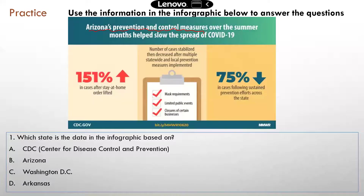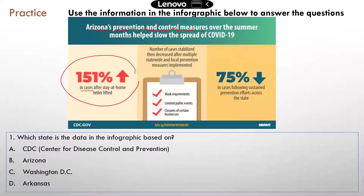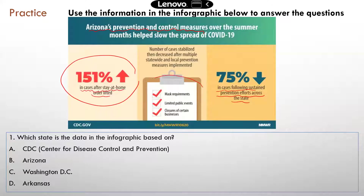You can read the three columns — three boxes. The first shows a 151% increase; the arrow pointing up means increase. So that's a 151% increase in cases after the stay-at-home order was lifted. On the other side, there's a down arrow, meaning cases went down — a 75% decrease in cases following sustained prevention efforts across the state. Those prevention efforts are the things Arizona implemented: mask requirements, limited public events, and closures of certain businesses.